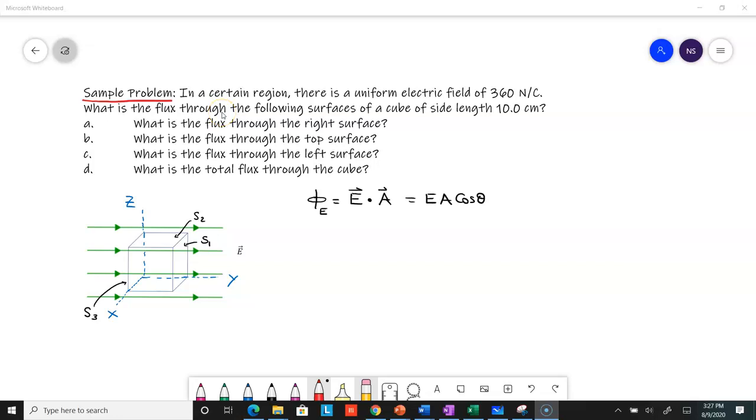Here is the sample problem. It gives you a uniform electric field of 360 newtons per Coulomb. If I take my XYZ axis the way I have shown here, that means the electric field is 360 newtons per Coulomb.